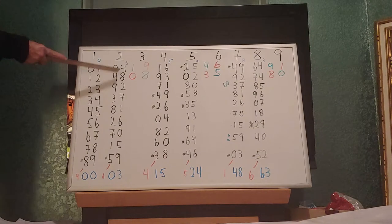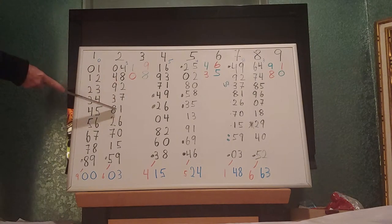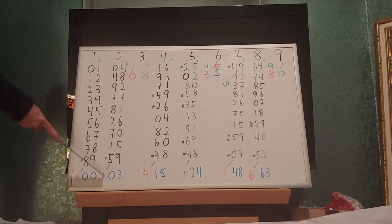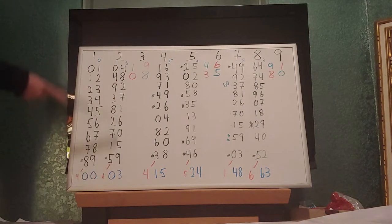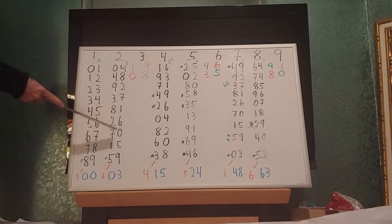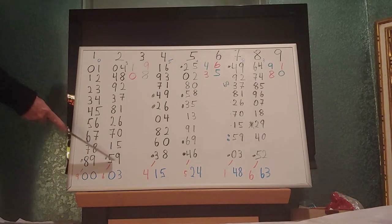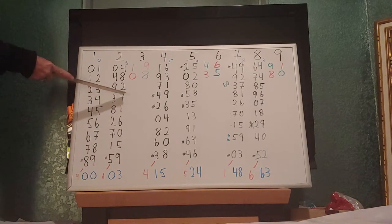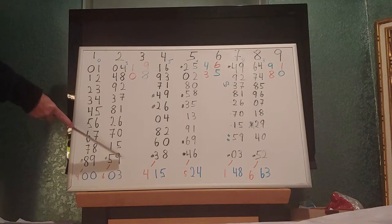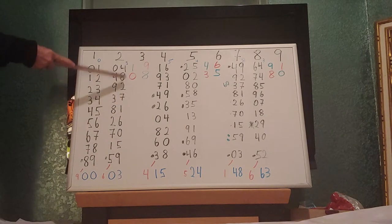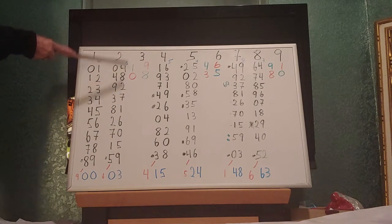We'll do 18 twos: 4, 9, 3, 8, 2, 7, 1, 6, then 4, 9, 3, 8, 2, 7, 1, 5, 9 — then 5, 0, 6, 1, 7, 2, 8, then 3, 9, 5, 0, 6, 1, 7, 2, 8, 4.